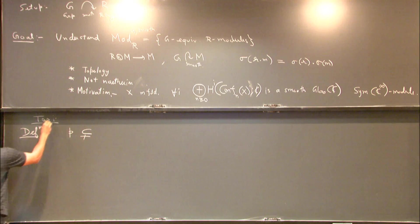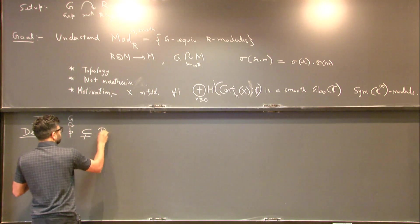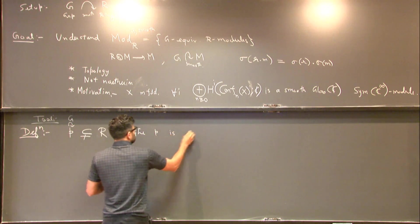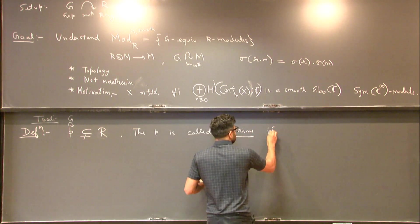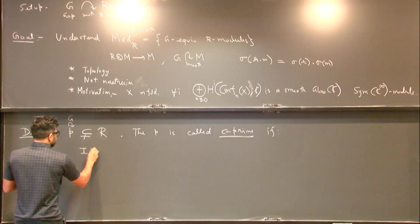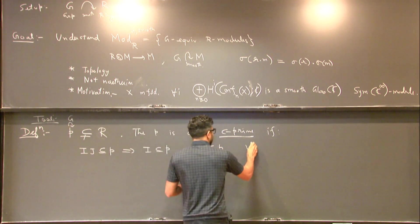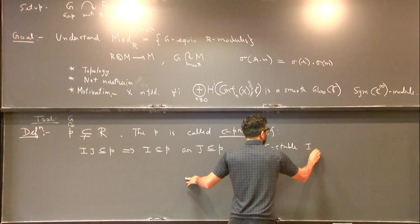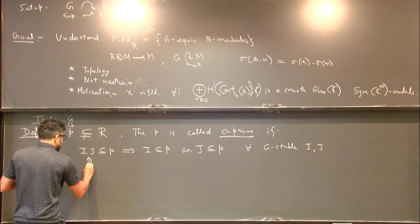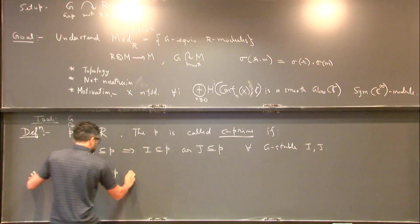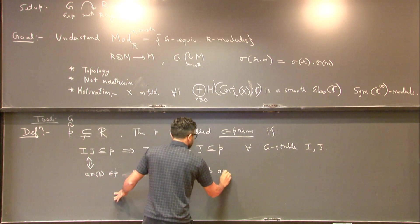Okay. So the tool that I have in this case is, so let's take a G stable ideal of R when P is called C prime if i, j is a subset of P implies i is a subset of P or j is a subset of P for all G stable i and j.